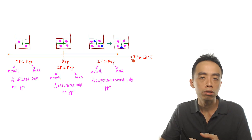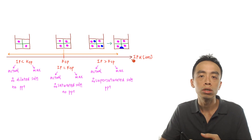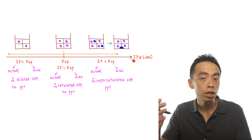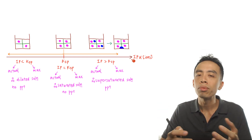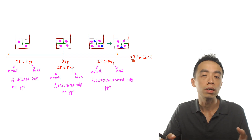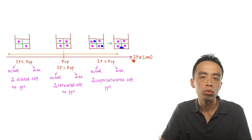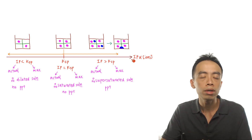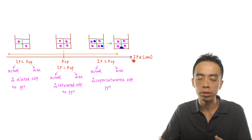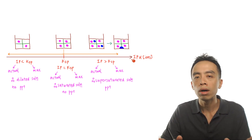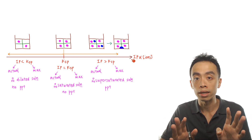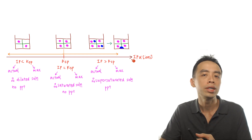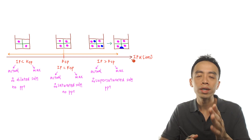Now that we know the difference between ionic product and solubility product, the most direct application is using ionic product and comparing it against solubility product to predict whether precipitation will occur for a particular solution. Since ionic product will vary while Ksp is a constant term, we need to know the relationship between IP versus Ksp. I visualize IP as a number line because it can vary, while Ksp is a specific point along this number line.